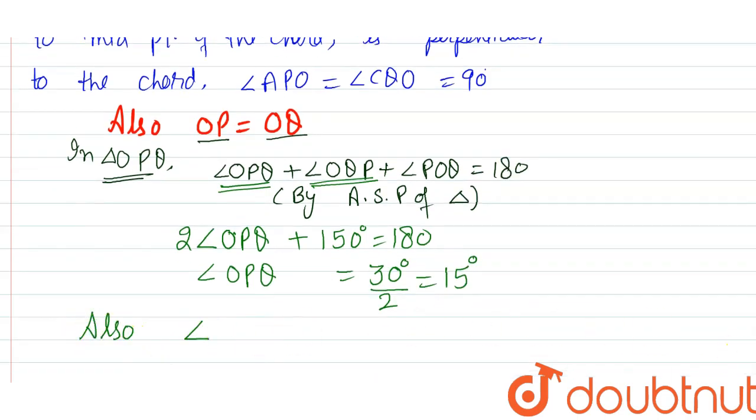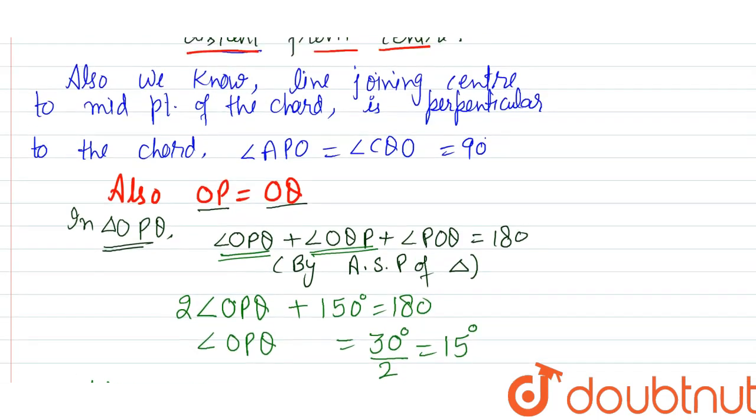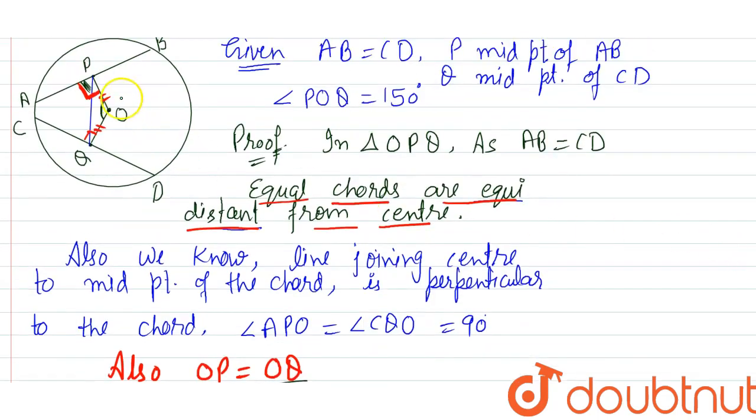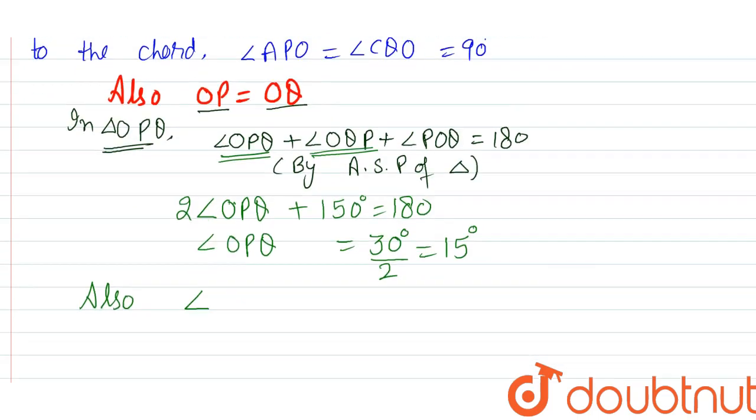Also, you have proved angle. Let us see in the diagram. You have proved that angle APO is 90 degrees as this was midpoint. So, line joining the midpoint to the center always perpendicular to the chord. So, this angle APO we have shown 90 degrees. Angle APO is equals to 90 degrees. So, APO can be written as angle APQ plus angle QPO. Total will be 90 degrees.